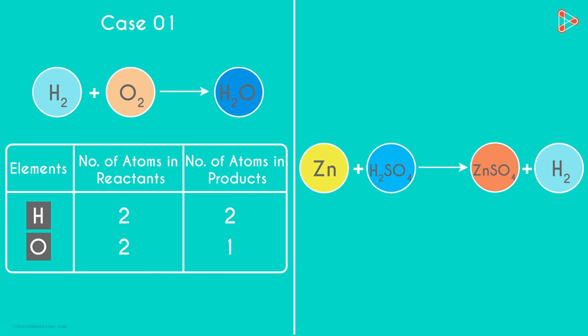For each element, we look at the numbers written in the second and the third column. For Hydrogen, we see that the number of atoms on each side is equal. But for Oxygen, we see that the number of atoms on the left is 2, and that on the right is just 1. Do you know what we call such an equation? Yes, unbalanced equation!